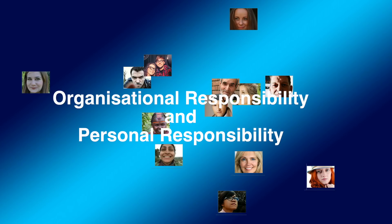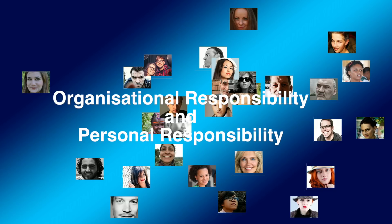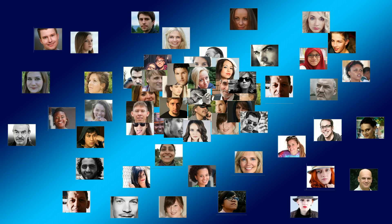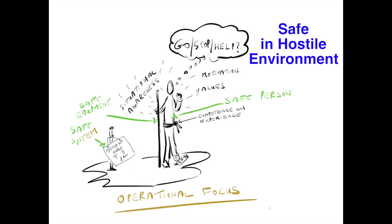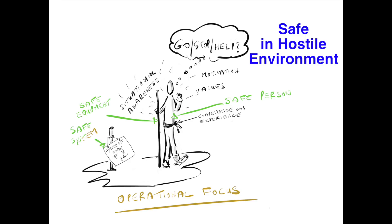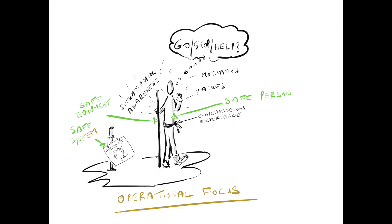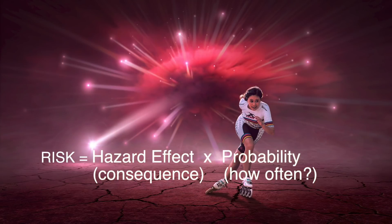This involves two elements: organisational responsibility and personal responsibility. For its part, the organisation must provide the necessary support to ensure workers are able to remain safe within a hostile environment. They need to be clear what they expect a worker to do in the field, and workers must be able to identify hazards and decide whether risk control is possible.